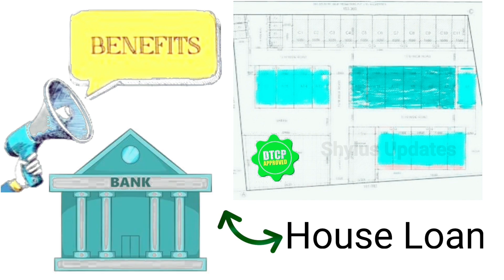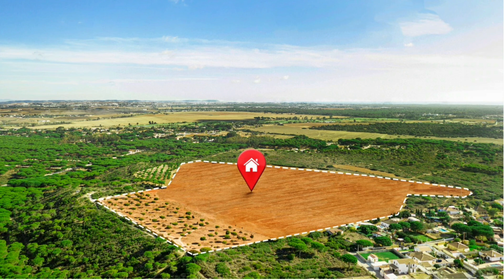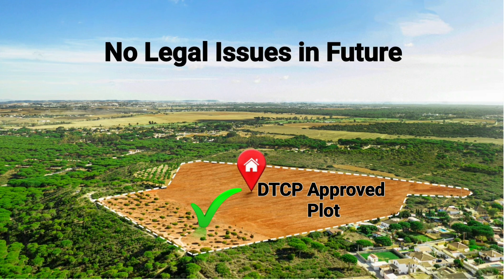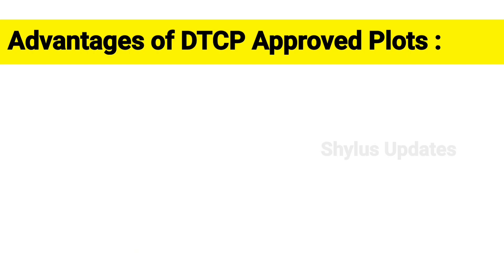Why is DTCP approval so beneficial? The primary benefit of DTCP certification is that it allows you to obtain a home loan from any bank or financial institution. If you buy DTCP approved plots and villas, there will be no legal issues in the future. You will live happily without any worries about your property. What are the advantages of DTCP approval?